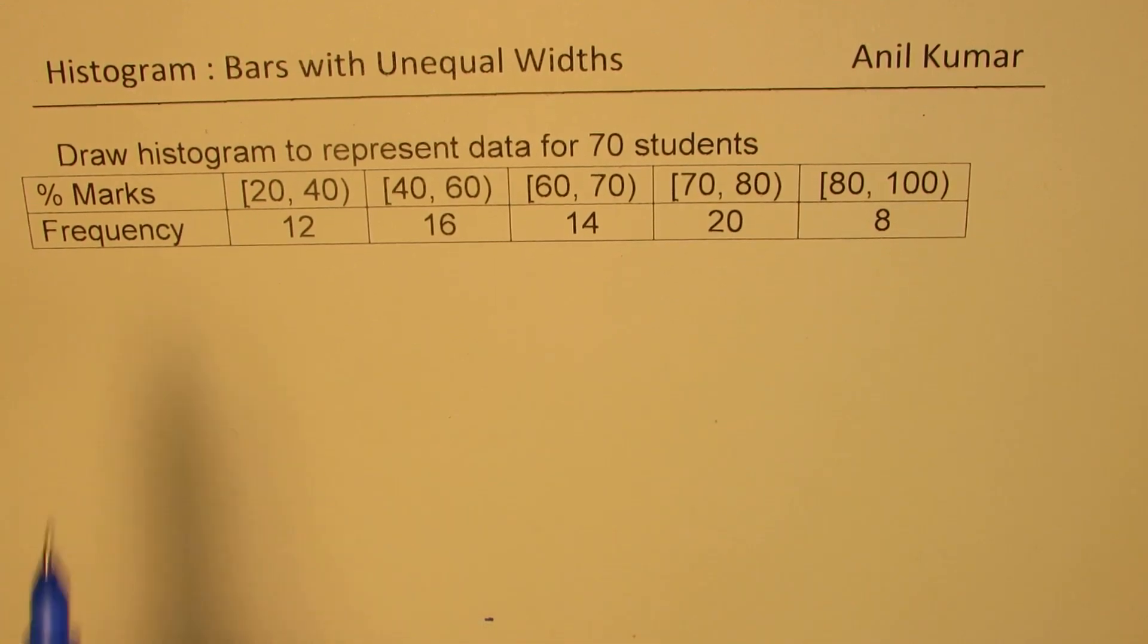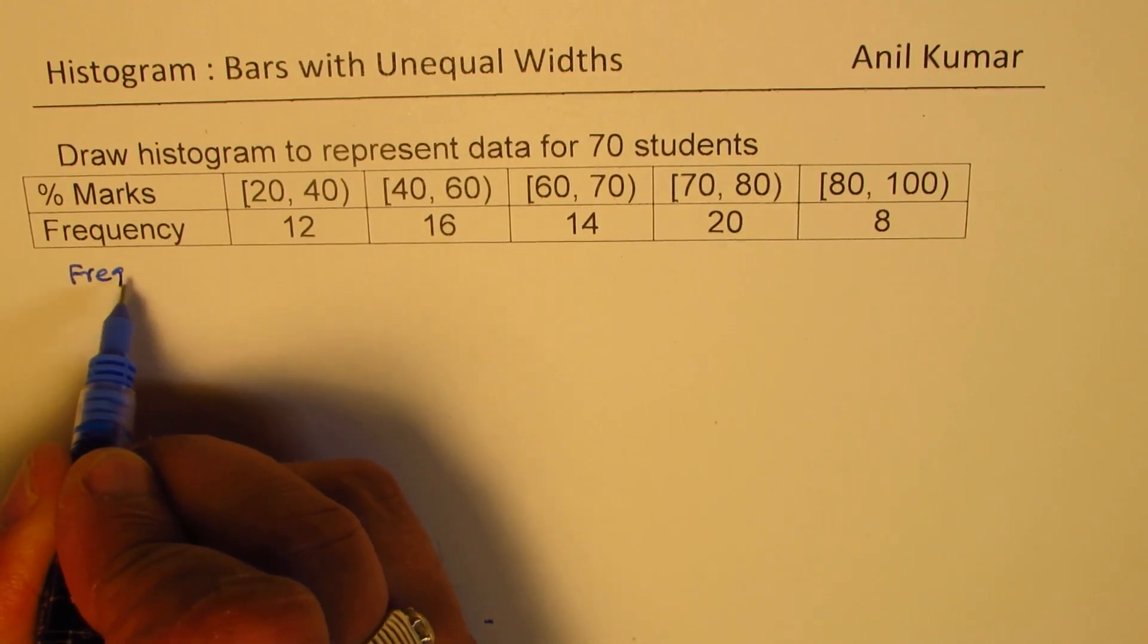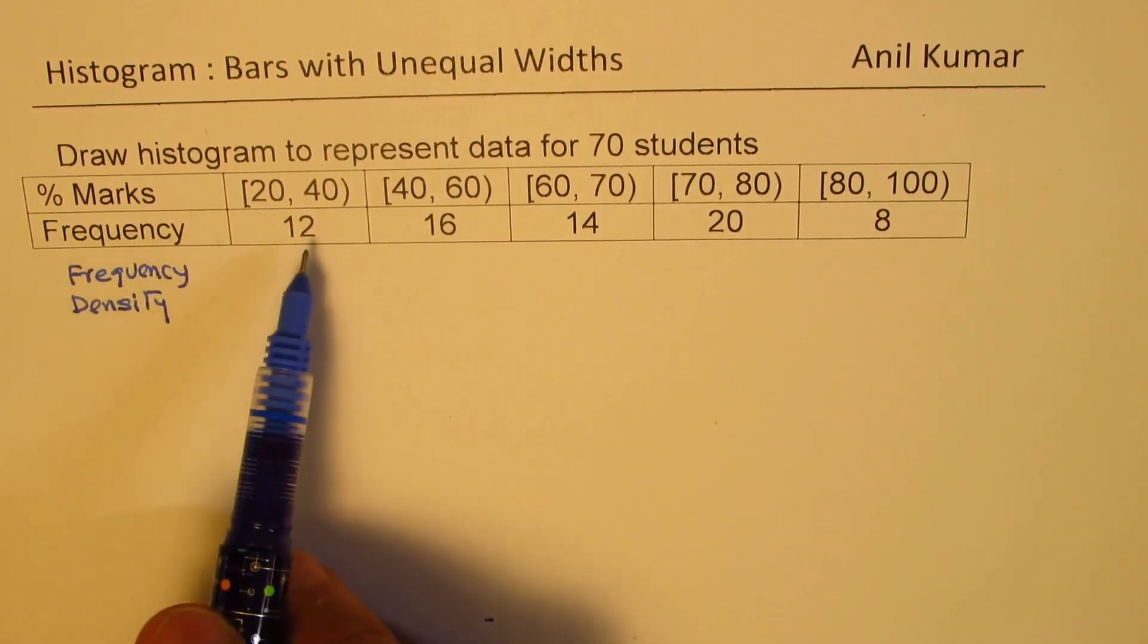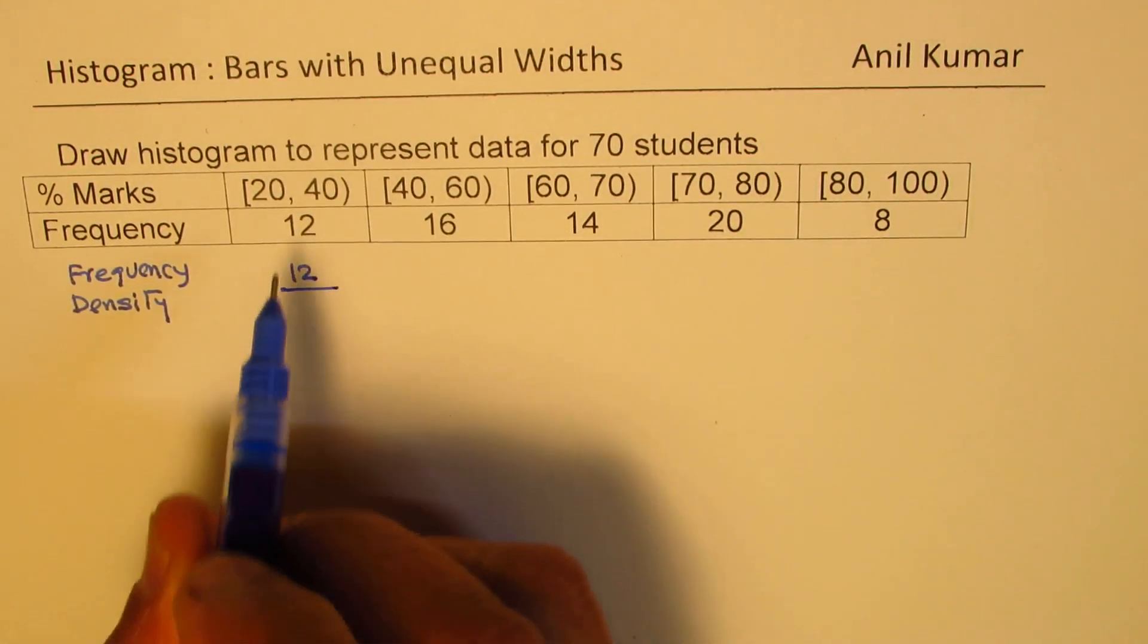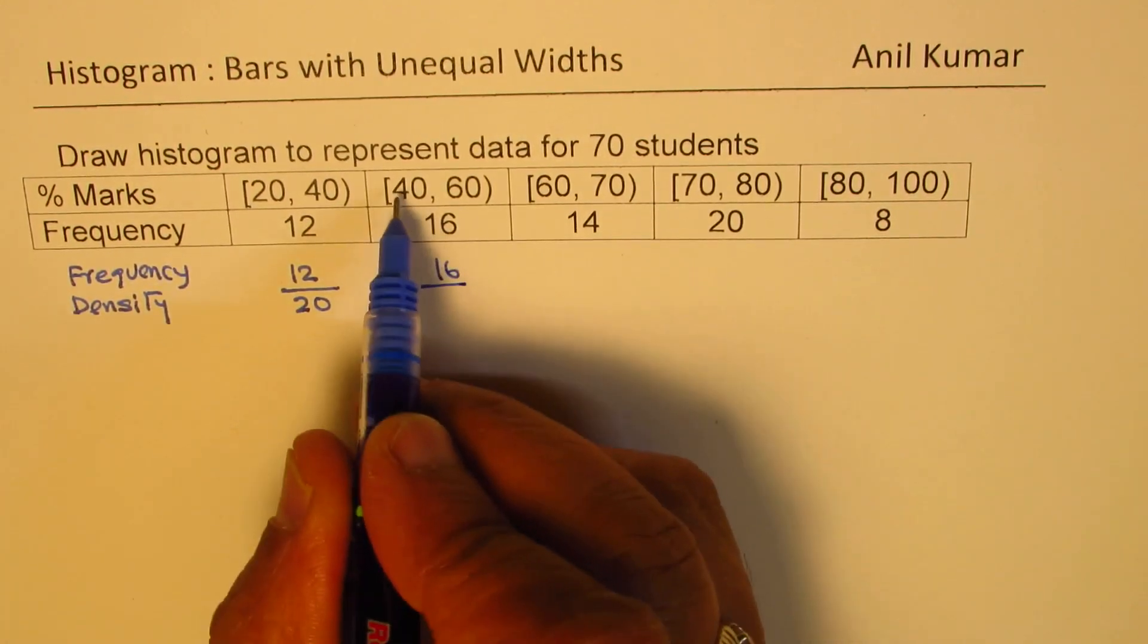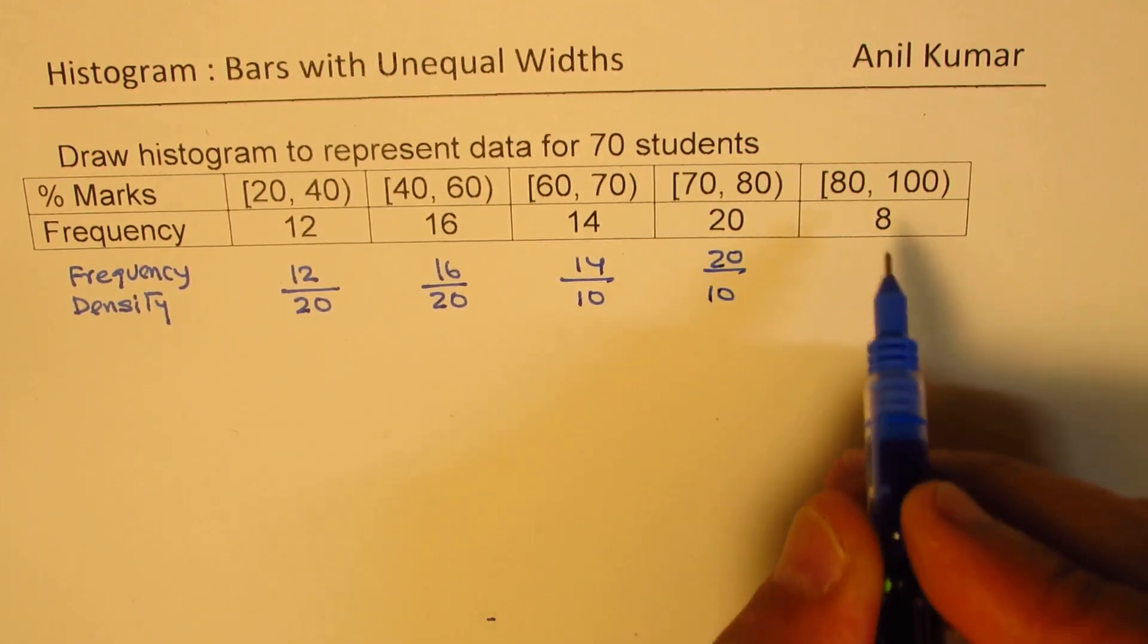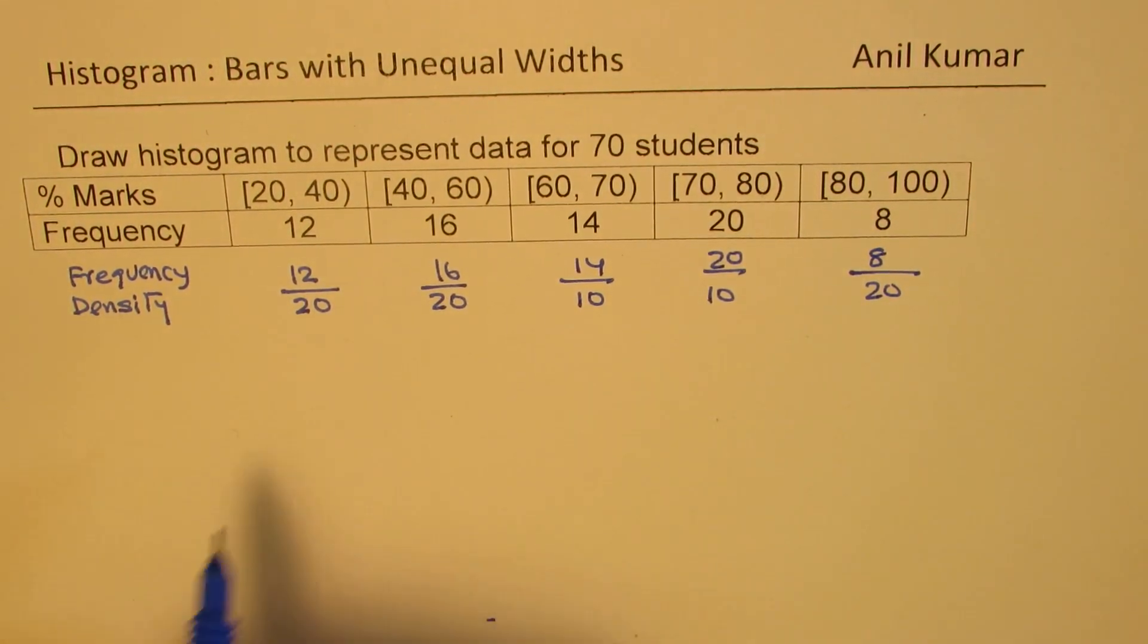To plot the histogram, the first step is to find frequency density. Frequency density is the frequency divided by the interval. For 20-40: 12 divided by 20. For 40-60: 16 divided by 20. For 60-70: 14 over 10. For 70-80: 20 over 10. For 80-100: 8 divided by 20.